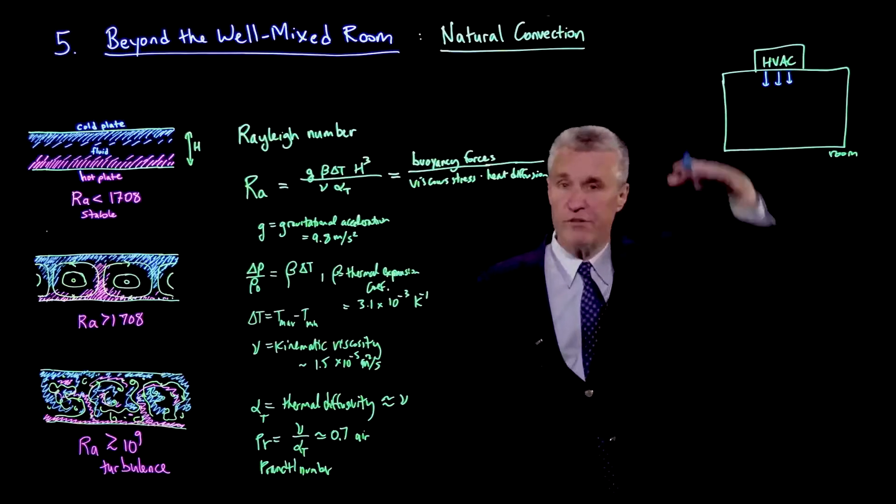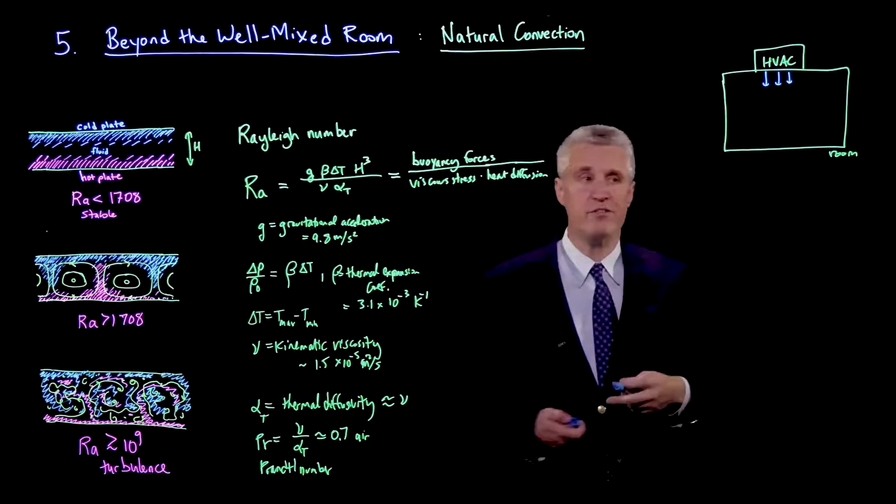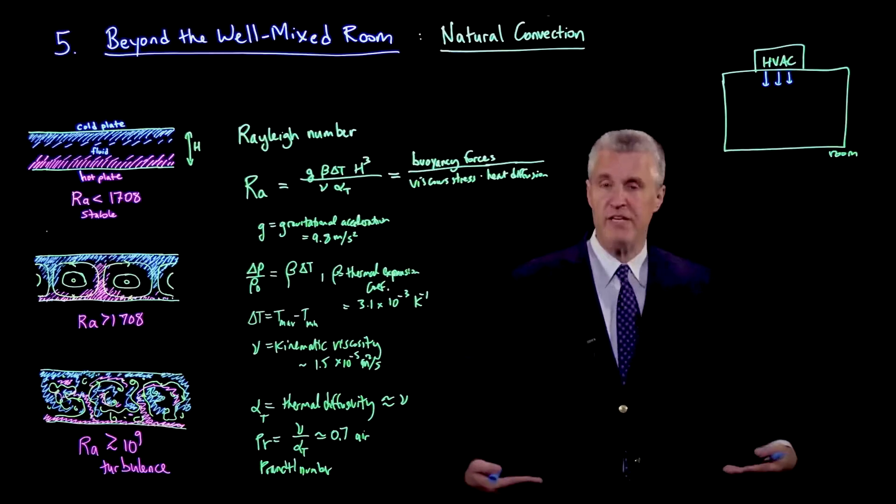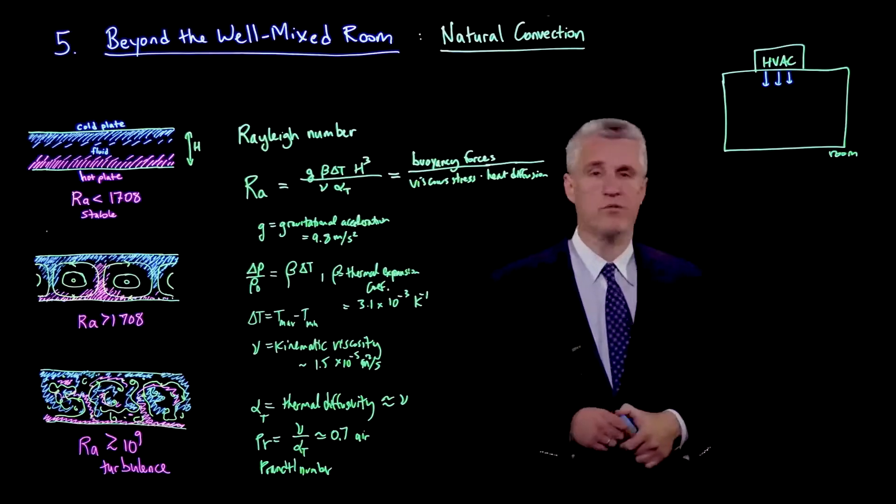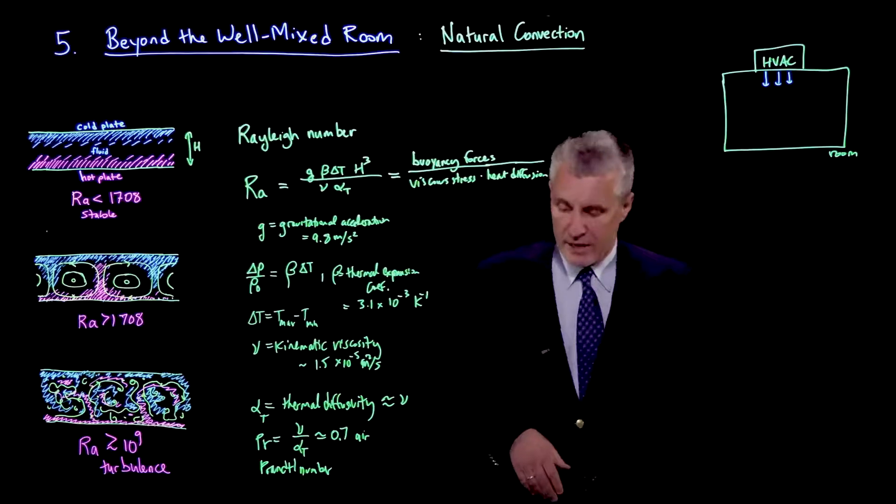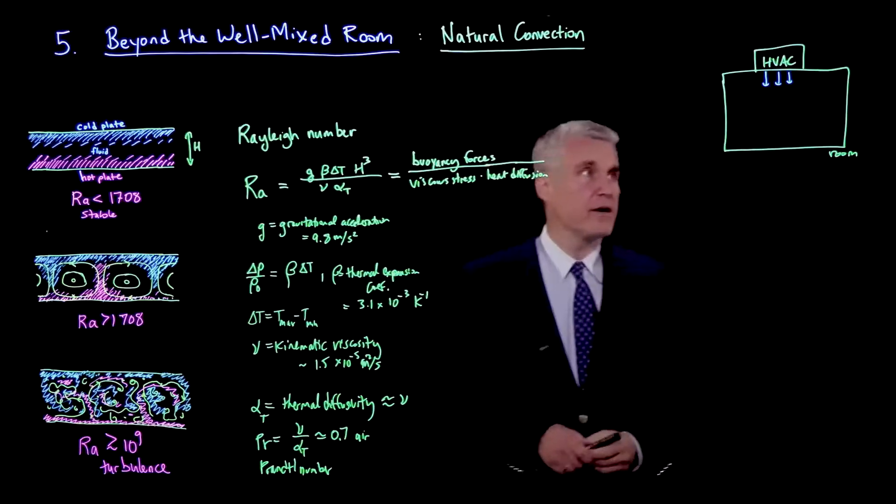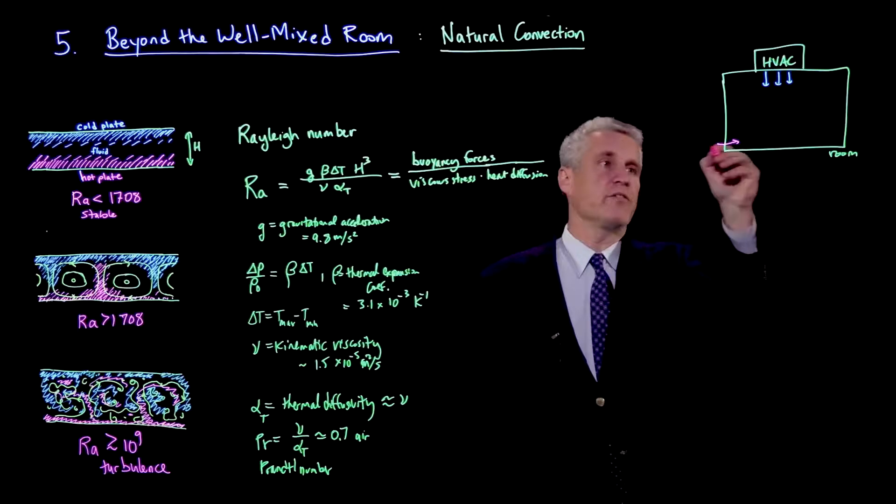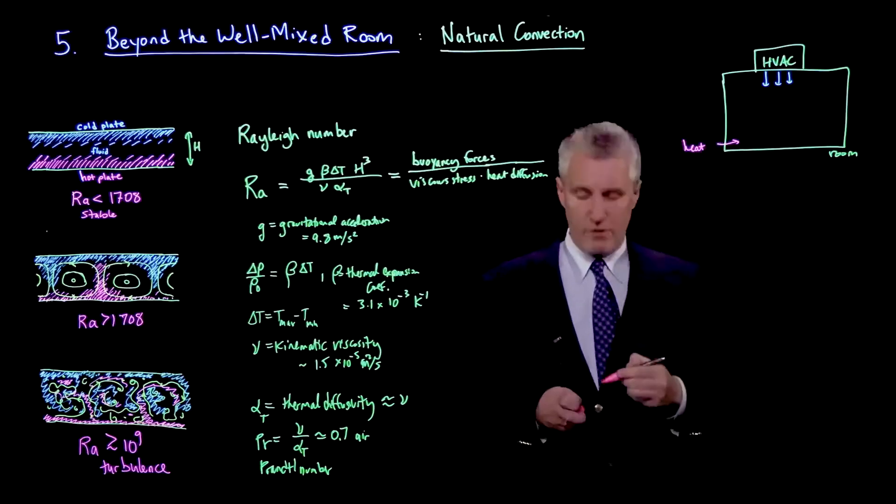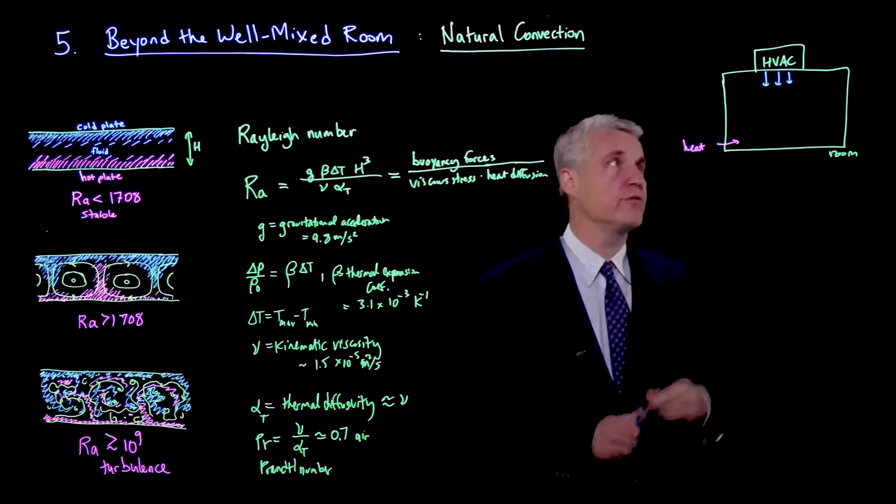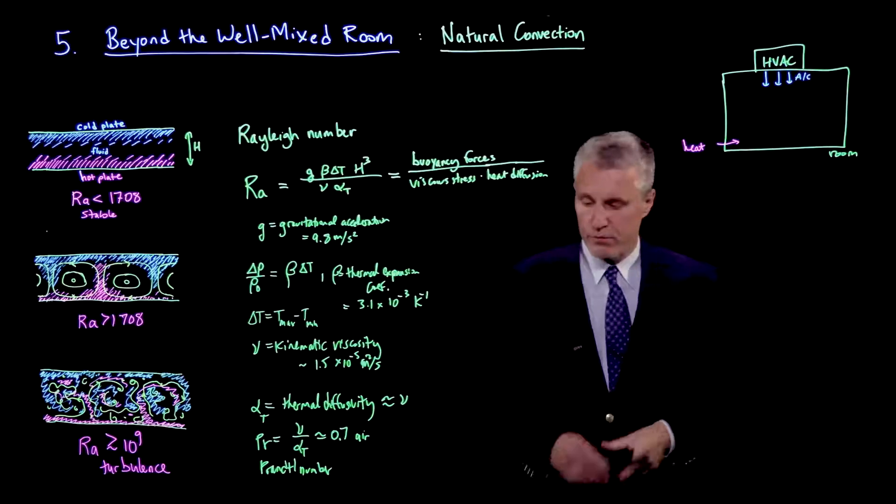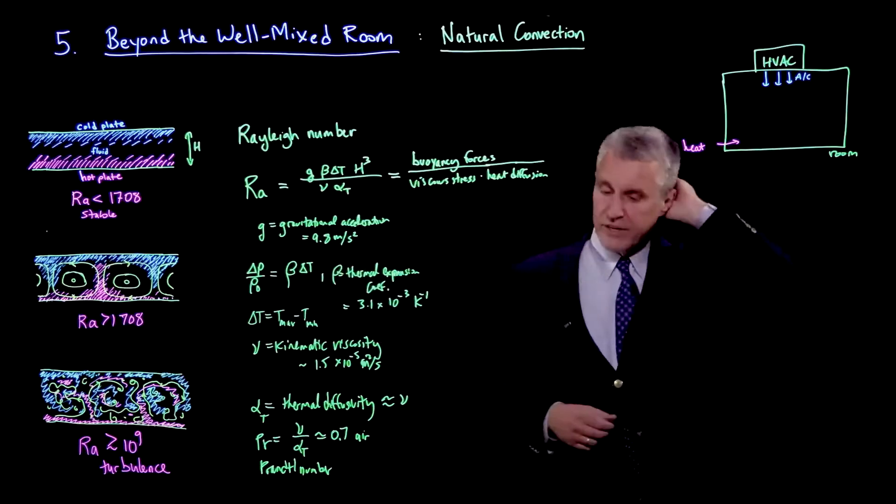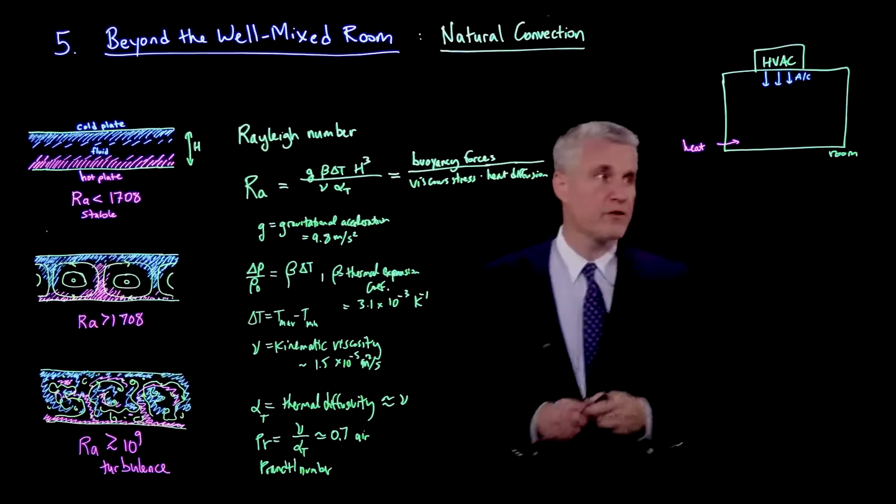We're injecting cold air, and we usually put it on top because we actually want good mixing in the room. That's how these systems are designed. We also inject heat normally from below, for example from the lower sections of the wall or from the floor. If we were to heat, we would do that. And if we're doing air conditioning or cooling, we would do it from above. So basically, there is an unstable gradient like this.